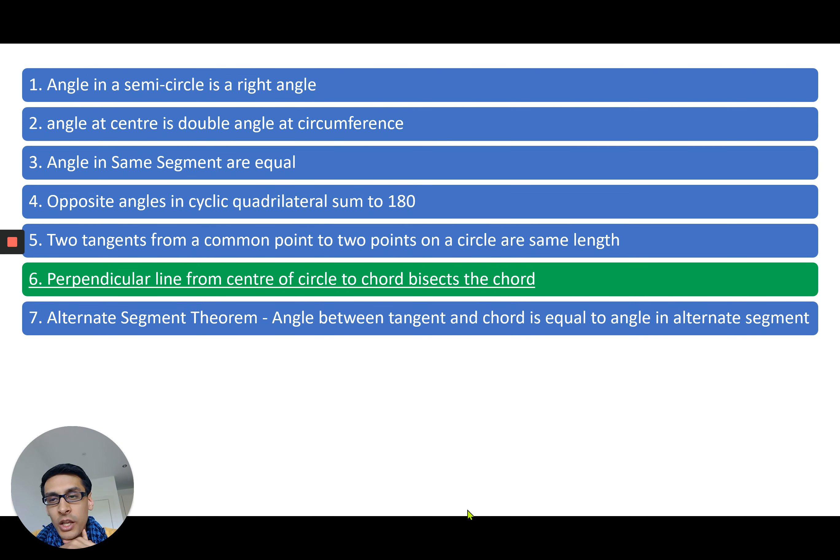So we're going to now show how a perpendicular line from the center of a circle to the chord bisects the chord.